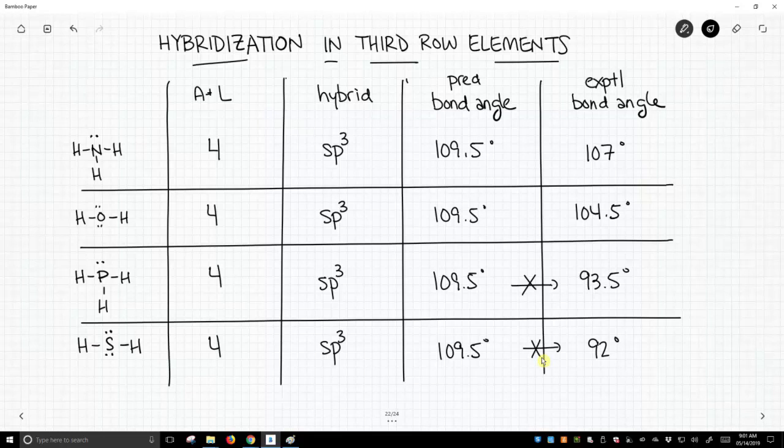So that's the point of this video. We've stuck with the second row elements because hybridization works well in the second row. Once you get off the second row, all bets are off. So tread carefully if you decide to apply hybridization to other rows of the periodic table.